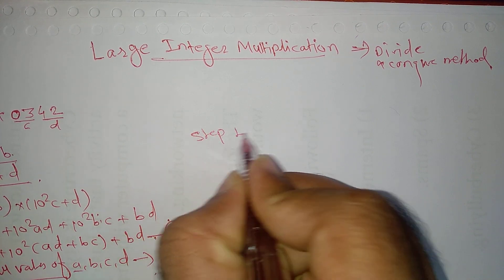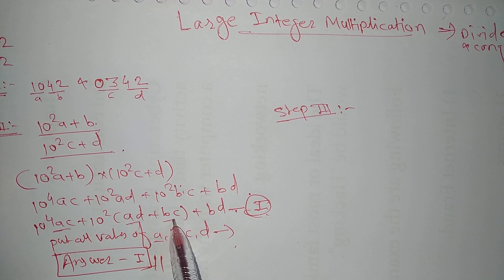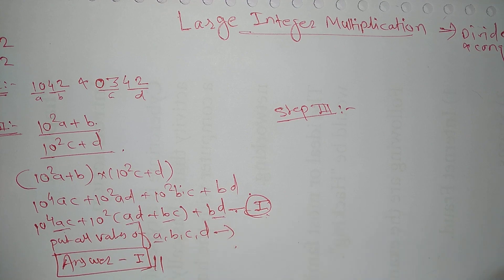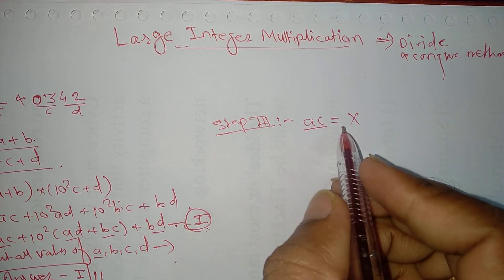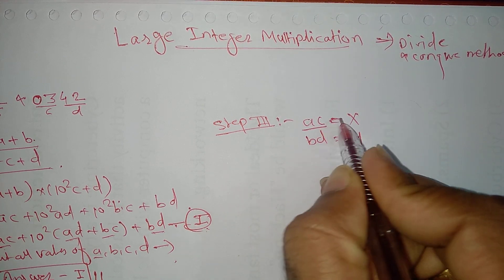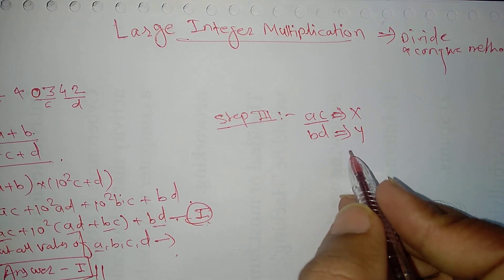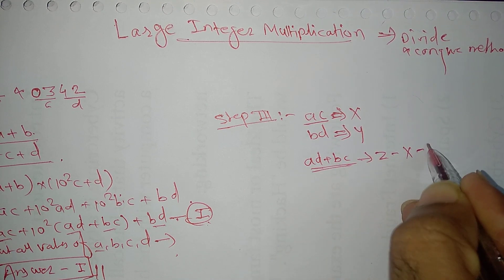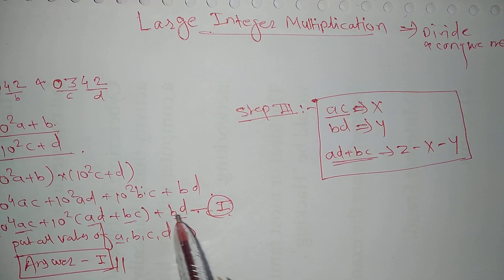In step 3, whatever multiplicants we have used — AC, AD, BC, and BD — we have to replace these 4 multiplicants with just 3 multiplicants. That will be the divide and conquer method, giving us fewer multiplications. So let AC = X and BD = Y. We also have to replace AD + BC with Z − X − Y. These are the 3 multiplicants to use in equation number 1.